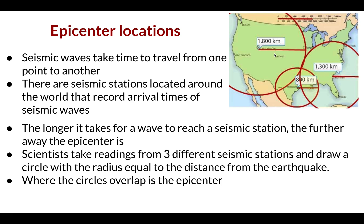Here's Salt Lake City — they received seismic waves and know those waves came from 1,800 kilometers away. Houston's seismic waves came from 800 kilometers away, and Savannah's seismic station from 1,300 kilometers away. What they did was draw a radius and a circle for all three, and where they intersect is where the earthquake happened.